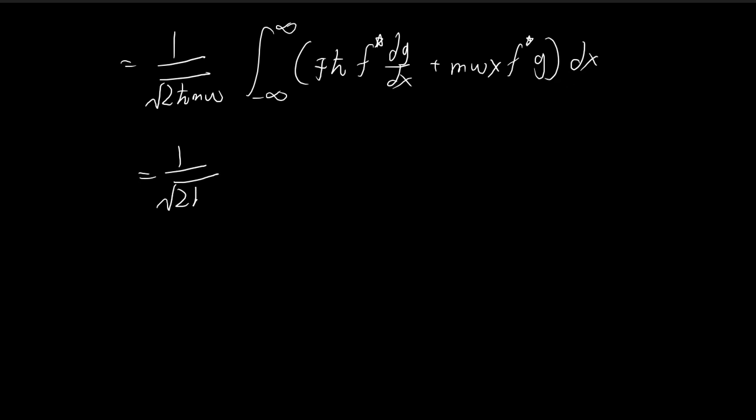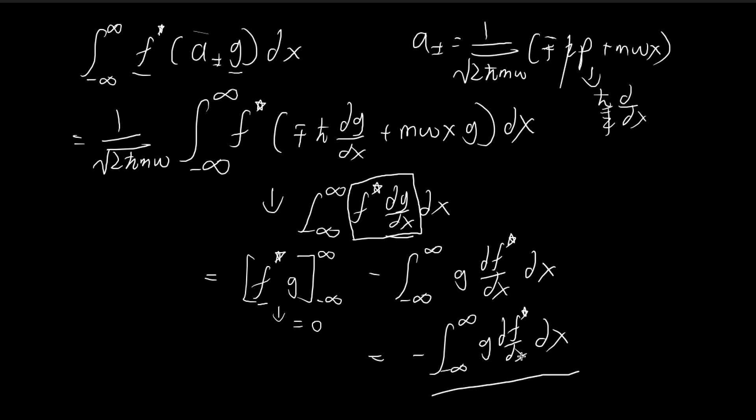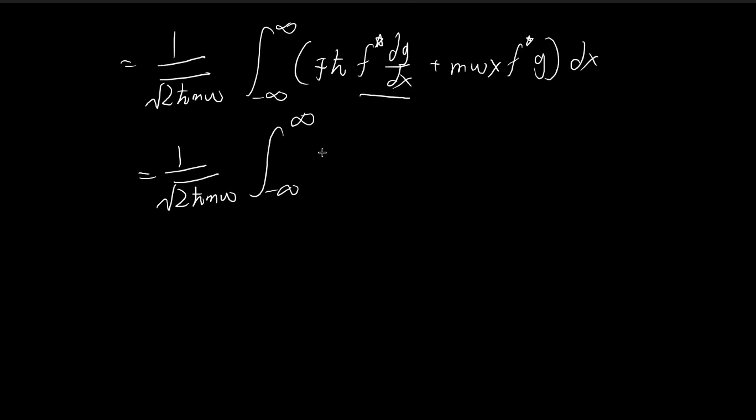And then now I'm going to substitute the result that we had before directly. So this term is going to become negative g times df/dx. So because of the negative sign, this becomes plus minus.